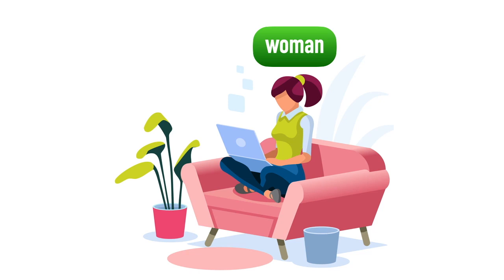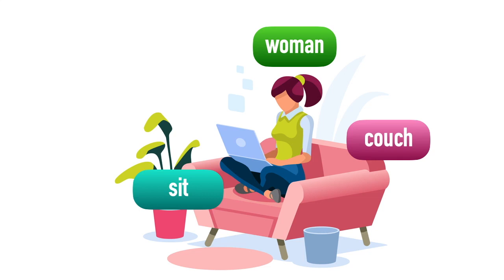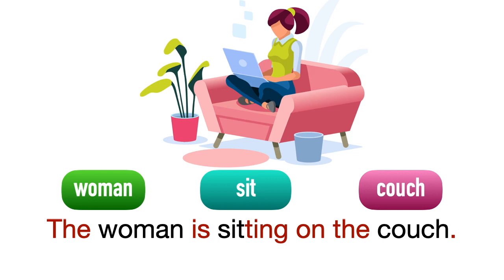Look at the picture — there's a woman. The action is sit, the place is couch. The woman is sitting on the couch. Duduk tidak boleh ada object. Berbeza dengan 'play ball' di mana bola adalah object — tetapi 'sit', apakah object yang diduduk? Tiada. Tapi tempat yang diduduk adalah couch.